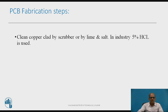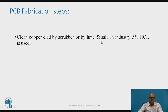After the copper clad is cut to the size of the PCB by using a hacksaw or shearing machine, the next step is to clean the copper clad using a scrubber or lime and salt. For industrial applications, 5% hydrochloric acid is used for cleaning the copper clad.